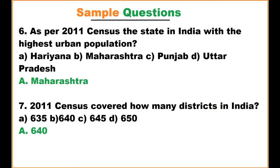As per the 2011 census, which state in India has the highest urban population? The options are Haryana, Maharashtra, Punjab, and Uttar Pradesh. The answer is Maharashtra — Maharashtra has the highest urban population in India. Note it is urban, not rural.